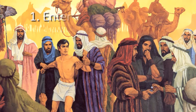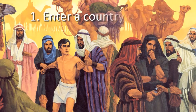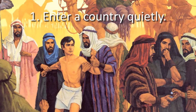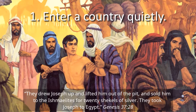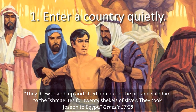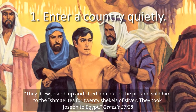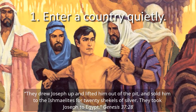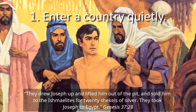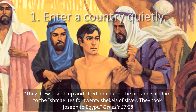Protocol 1: Enter a Country Quietly. They drew Joseph up and lifted him out of the pit, and sold him to the Ishmaelites for twenty shekels of silver. They took Joseph to Egypt.